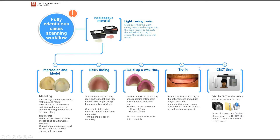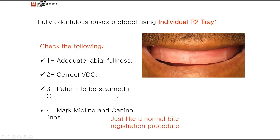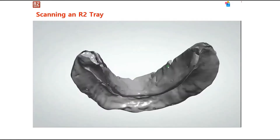Let's talk about what we do in the patient's mouth during the try-in in order to perform guided surgery. During the try-in, you need to check that we have good labial fullness, the correct vertical dimension of occlusion, and the patient's centric relation. We mark the midline and the canine line, just like we do in a normal bite registration process when fabricating a denture.